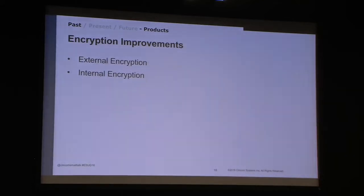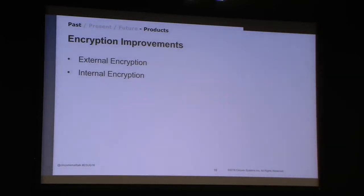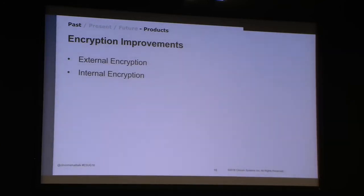On the encryption side, an interesting story: because of the capability of our encryption, we ran into some export issues with the government. We decided our solution would be to remove the internal encryption and hook up to external libraries to solve the problem. After that was basically developed, that export ban was lifted. So we said, well, now we have two solutions — we'll give our customers both. You can use internal encryption written in Smalltalk, or if it's a standard in your organization like OpenSSL, you can hook up to that solution.